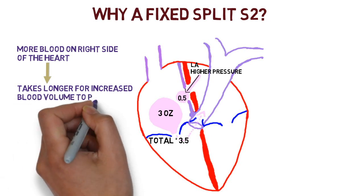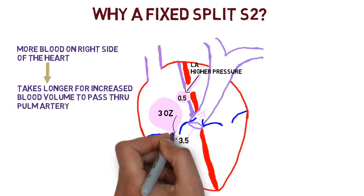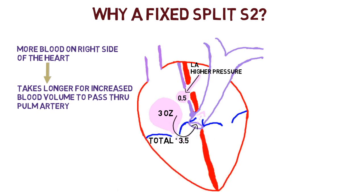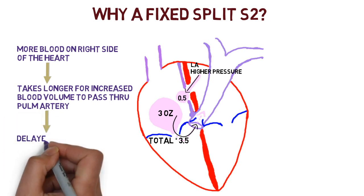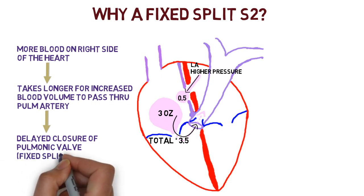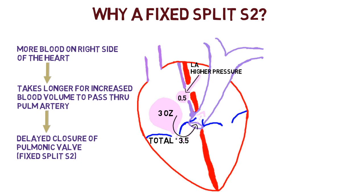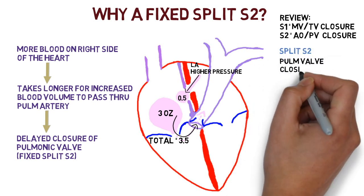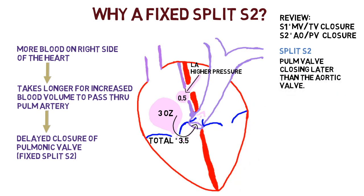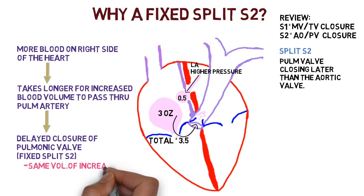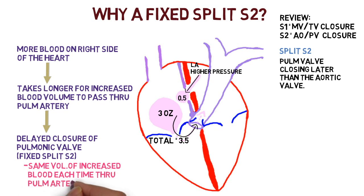More blood on the right side of the heart means it takes longer for that increased blood volume to pass through the pulmonary artery, because there's extra blood from the left atrium. This leads to a delayed closure of the pulmonic valve — a fixed split S2. S2 is aortic and pulmonic valve closure; a split S2 is the pulmonic valve closing later than the aortic valve. With the same increased volume each time, this delay becomes fixed.